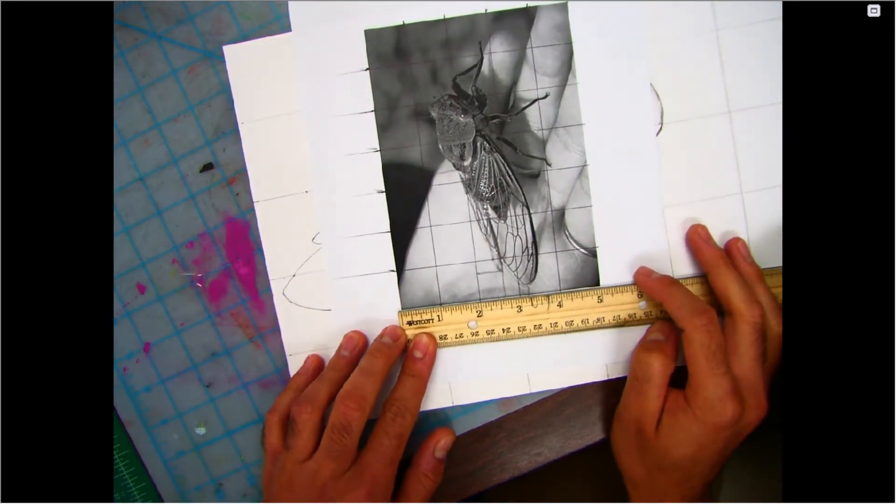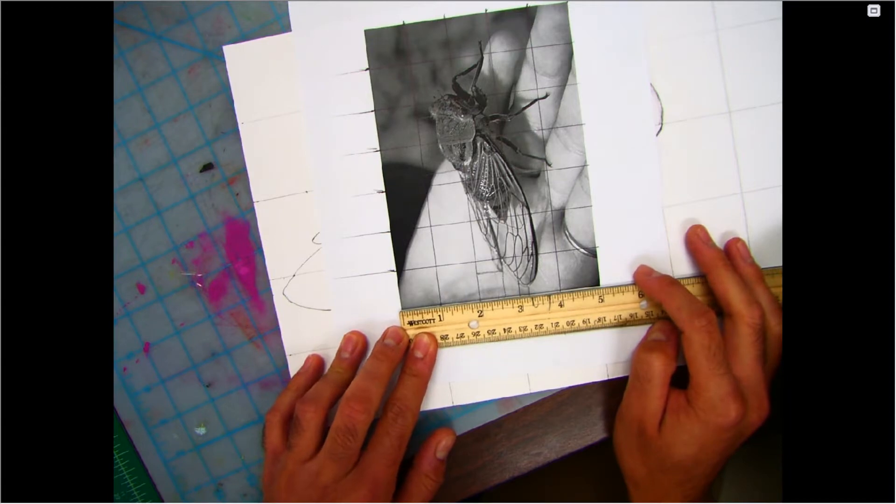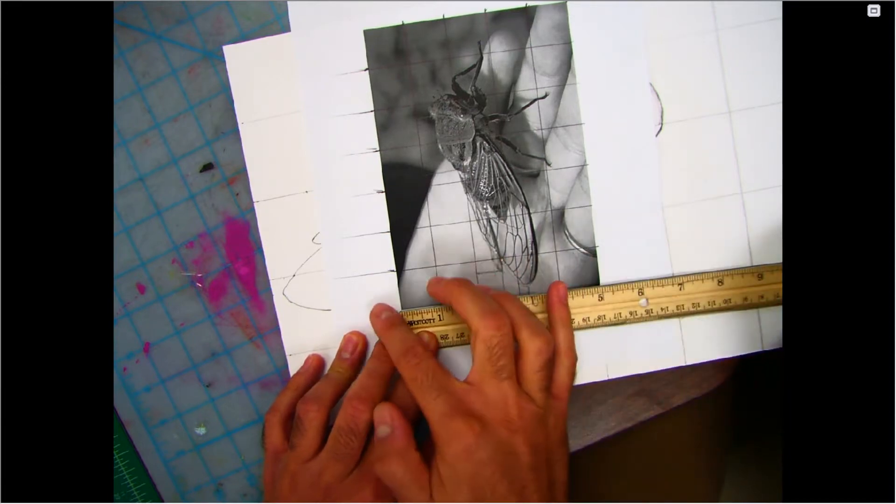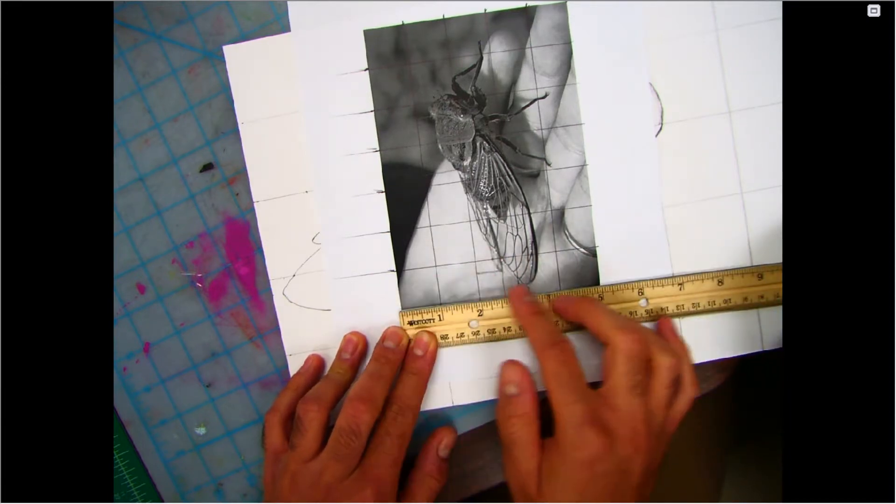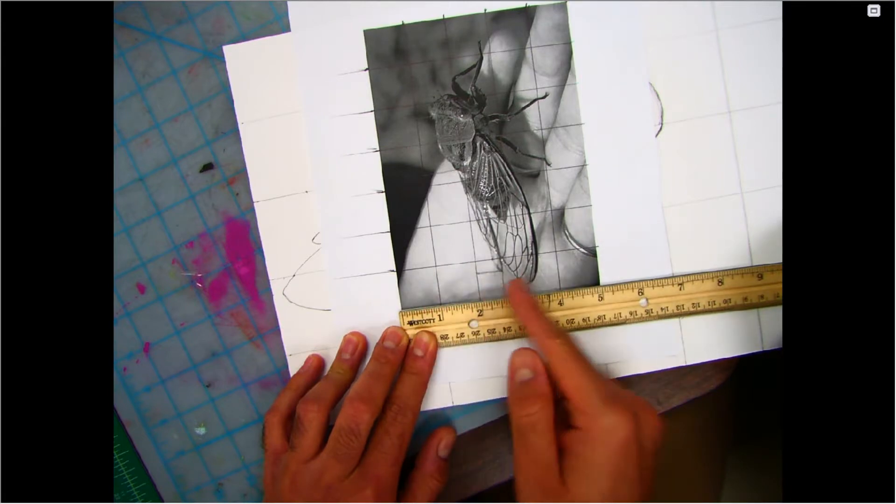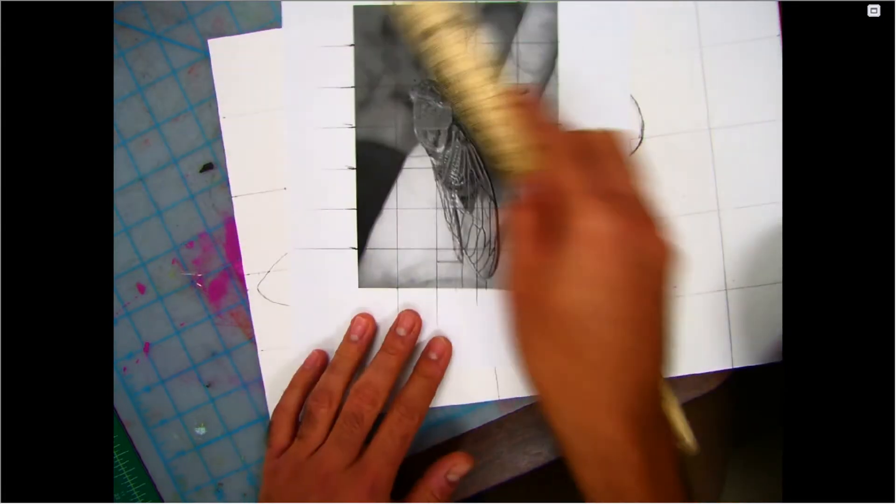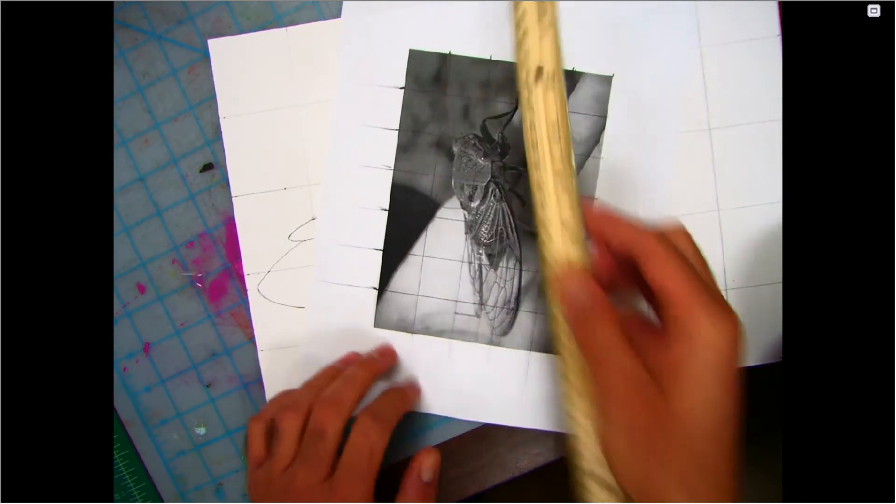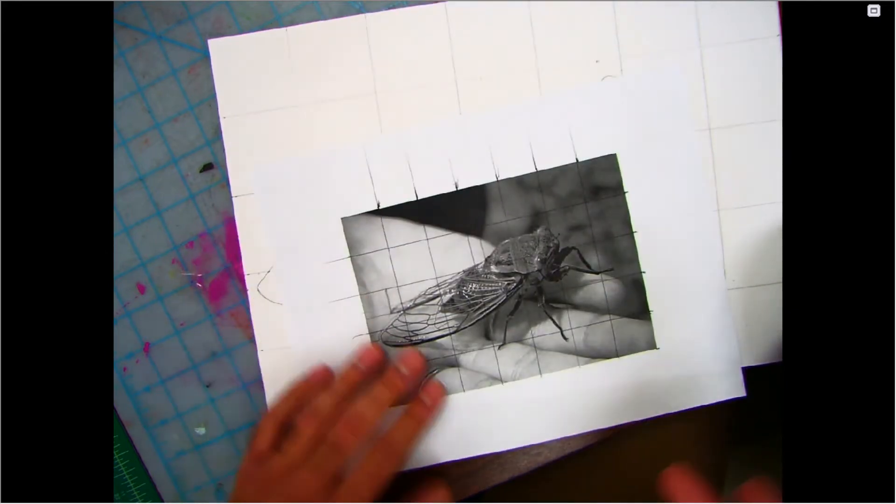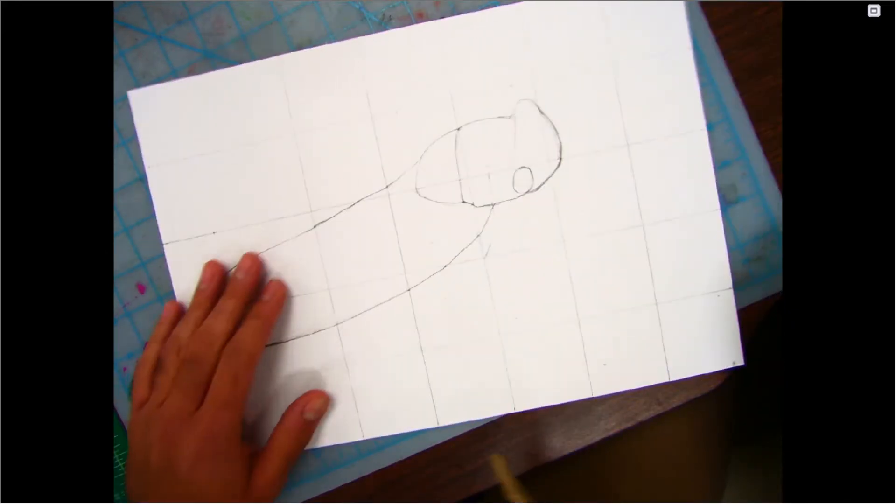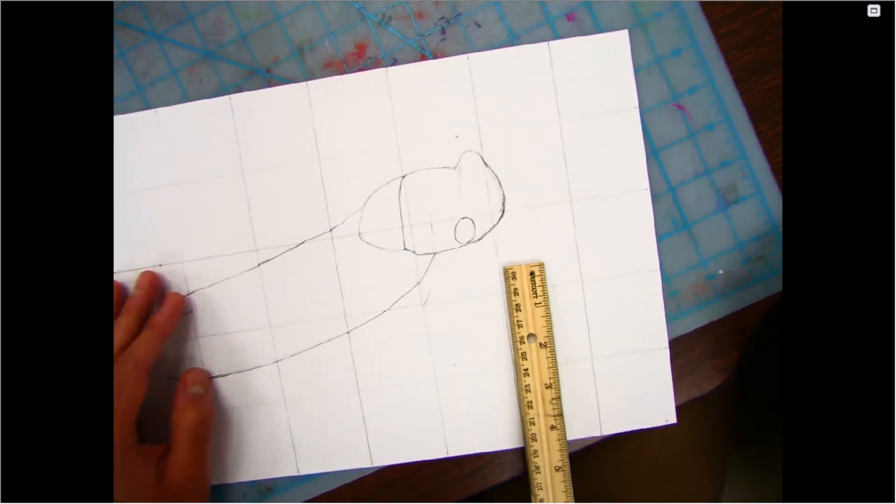Line the ruler up again, making sure it's lined up between the five and this first notch. Notch off every inch. Once you do that for every side and you have those notches, you can just connect the dots and it makes a one by one grid. Now, backtracking again, we're going to do the same thing to our sheet of paper.